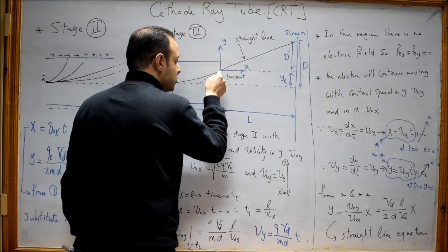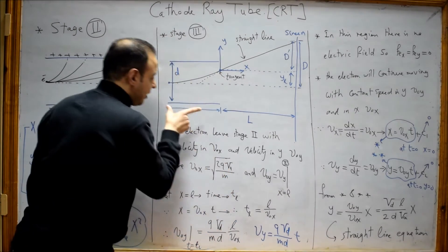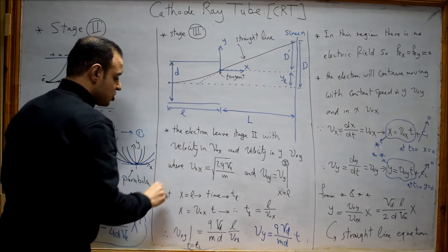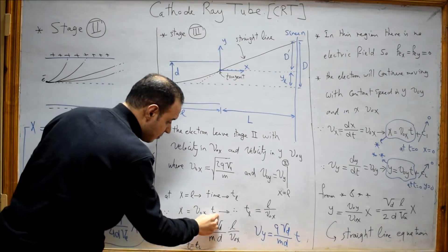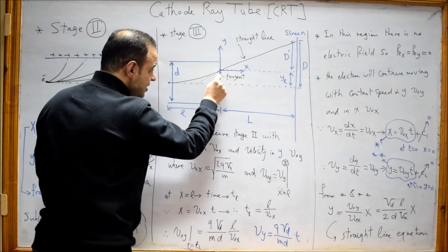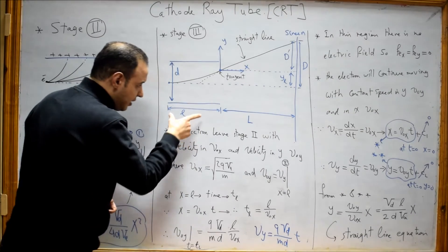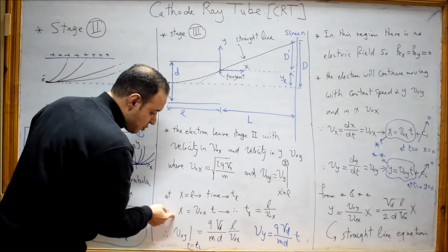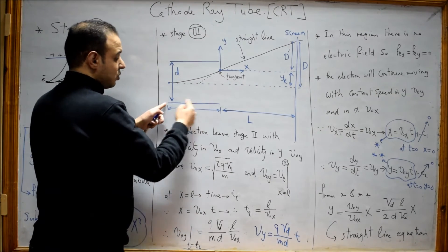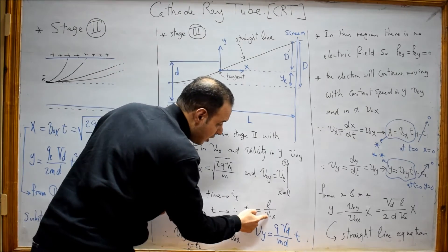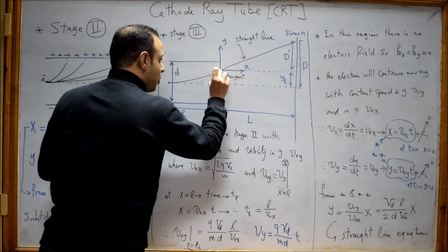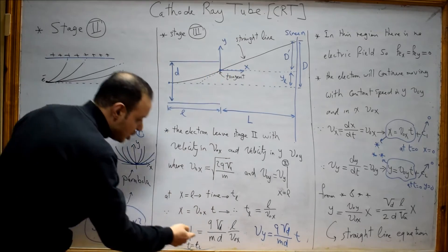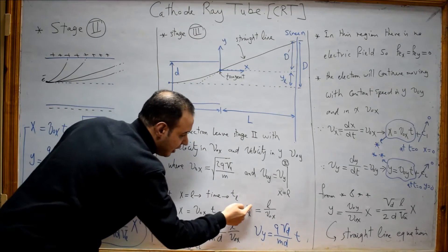To determine the velocity in the y direction at the exit point, we need the time taken by the electron to travel from the entry to the exit of the deflection plates. We know that in this stage, x equals v₀x multiplied by time. When the electron reaches the exit point, it has traveled a distance L, the length of the deflection plates. So substituting x with L gives L = v₀x · T_L, meaning T_L = L / v₀x. We now know that the electron takes time T_L = L / v₀x to traverse the plates. To find the velocity in the y direction at the exit, we substitute this time T_L = L / v₀x.